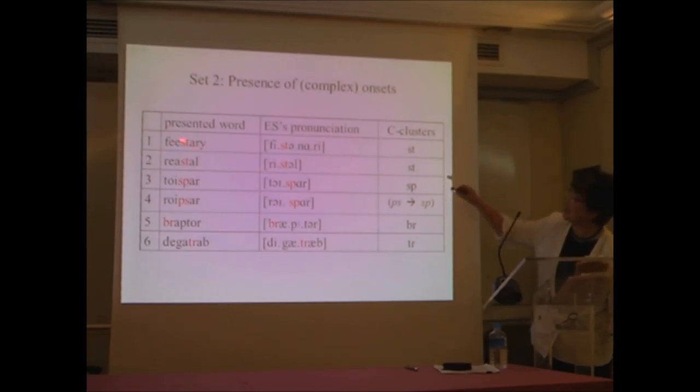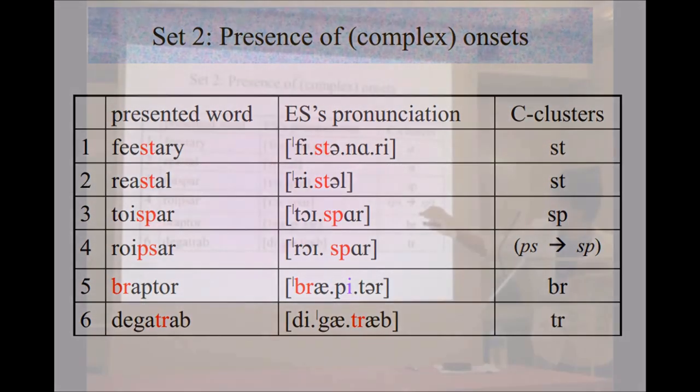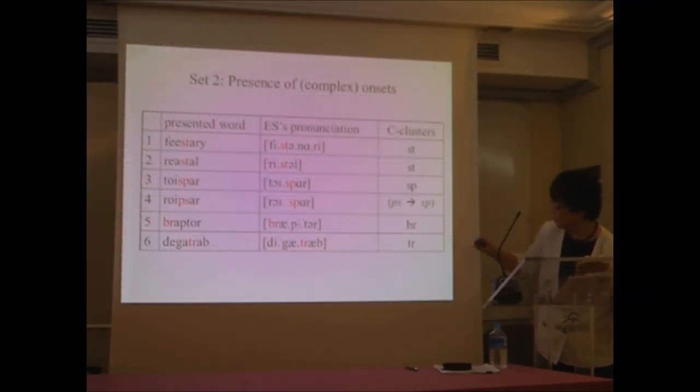And on the other hand, the onset, even though the onset is complex, she has no problems. So 'feed-stray,' ST. Her pronunciation is really good, regular. Consonant clusters are ST. Here another ST. Here SP. She has no problem. And this one is not fuzzy: 'toipsa.' What she did is PS. PS is not an allowed combination of consonant clusters in English. So she exchanged it to SP. And her pronunciation perfectly follows the English structure. Here's another one. So the onsets are there, but the codas are not there.